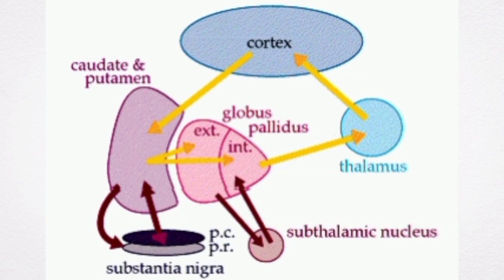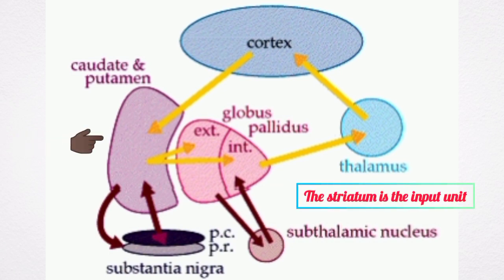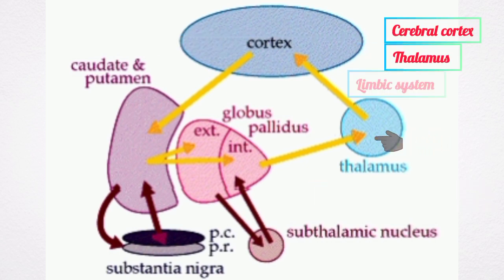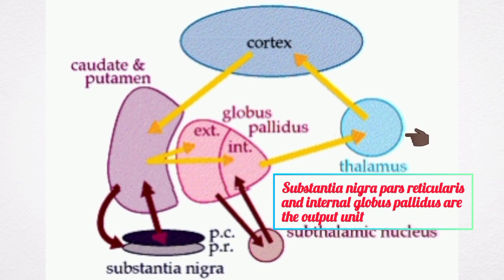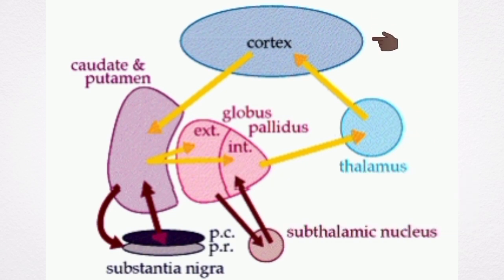The input unit of the basal ganglia is the striatum, which receives innervation from the entire cerebral cortex, the thalamus, and the limbic system. The output units are the substantia nigra pars reticularis and the internal globus pallidus, which project to the thalamus, and in turn project to the cortex, forming a loop.